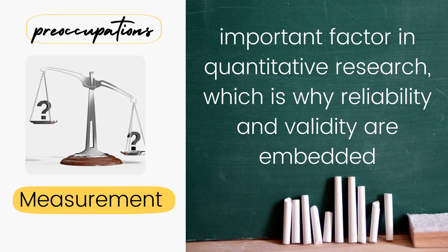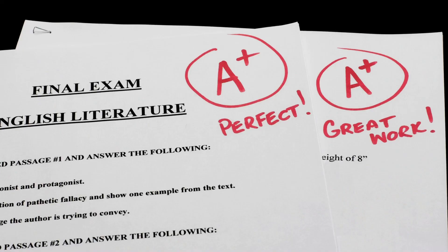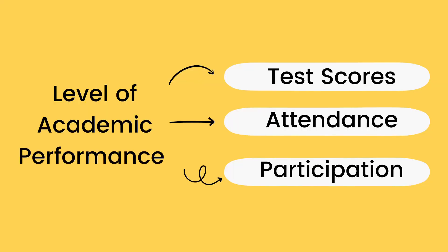To start with, measurement. Measurement is an important factor in quantitative research. This is why reliability and validity are embedded in quantitative research. Remember, we are dealing with numerical data in quantitative research, so most of the variables we are going to study should be in numbers and should be measurable. There are variables that are already measured using standard measurements — for example, academic performance. Academic performance is measured in grades, number of attendance, number of participation, and scores in standardized tests.